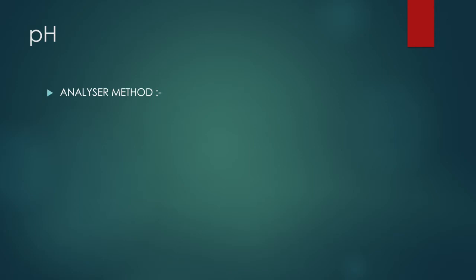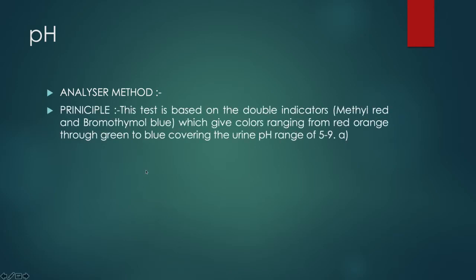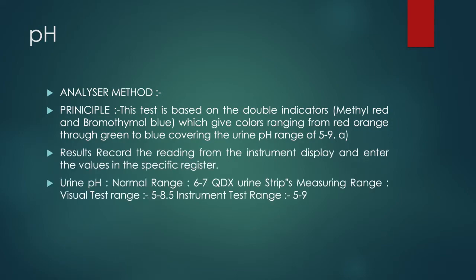The analyzer method provides two ranges — one showing the maximum value and another showing the minimum value. When using urine strips, the normal urine pH range is 6 to 7. For the visual test method, it can range from 5 to 9.